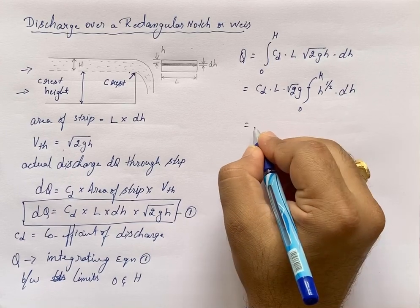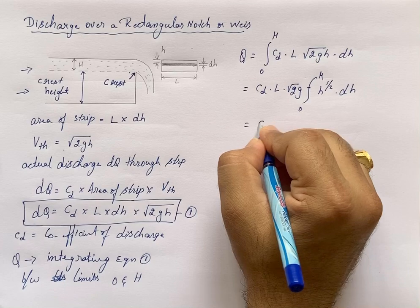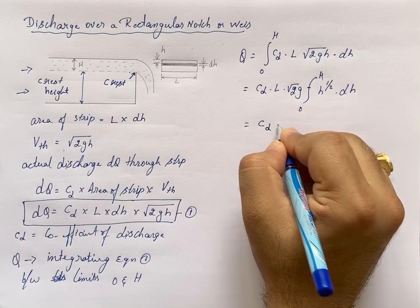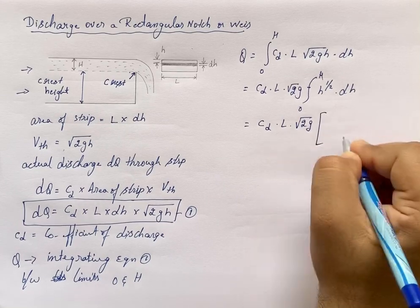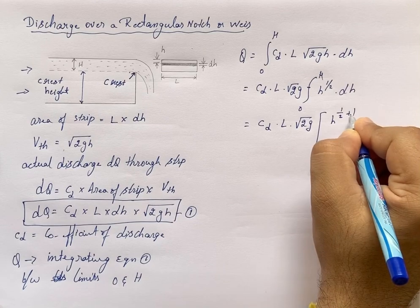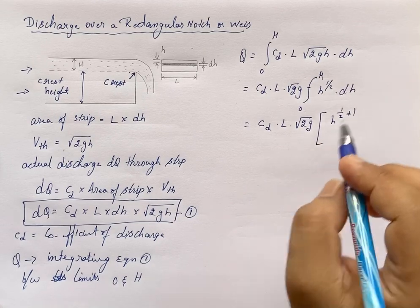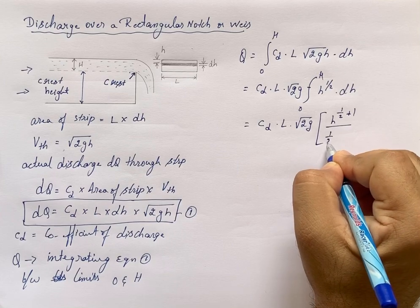What is the integration of H^(1/2)? Cd × L × √(2g) times H^(1/2 + 1), which is H^(n+1) divided by (n+1).